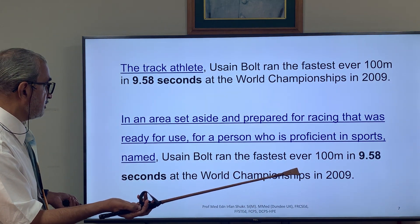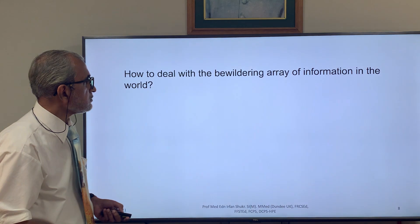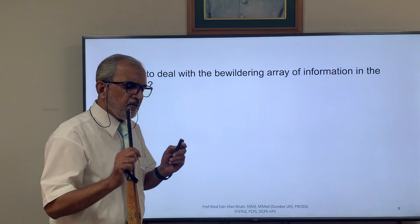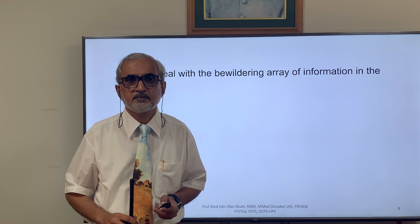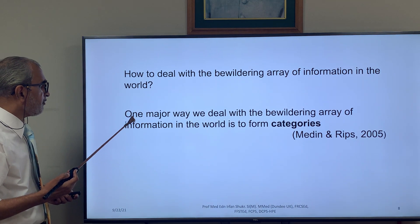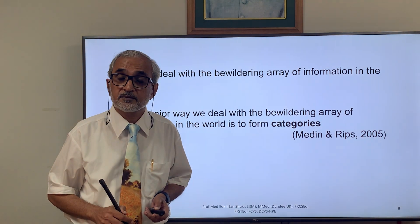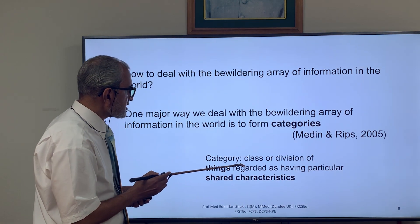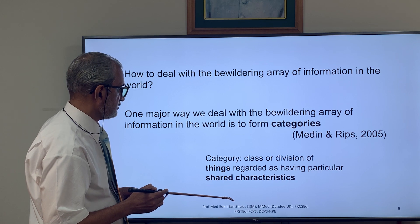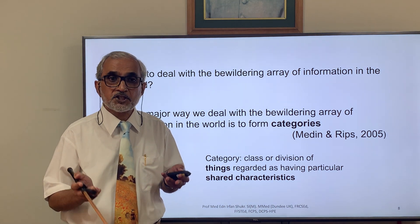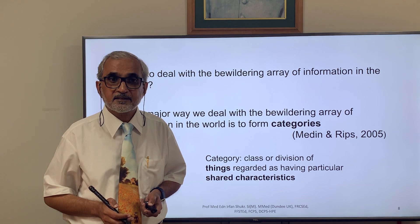And if those replacement words are also unclear, one has to use even more words to communicate. So how do we deal with the ever-dividing area of information we receive in the form of words? Madeline Riff says one major way to deal with this is to form categories. A category is a class or division of things regarded as having particular shared characteristics.